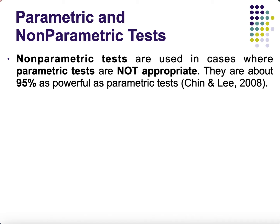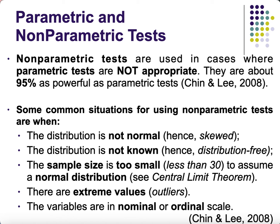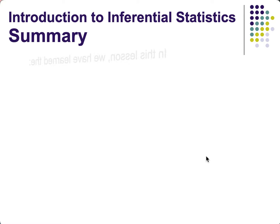According to Chin and Lee (2008), non-parametric tests are about 95% as powerful as parametric tests. Common situations for using non-parametric tests include: the distribution is not normal or not known (also called distribution-free), the sample size is too small to assume normality, there are extreme values or outliers (means are sensitive to outliers), and the variables are in nominal or ordinal scale — since parametric tests require at least interval scale.